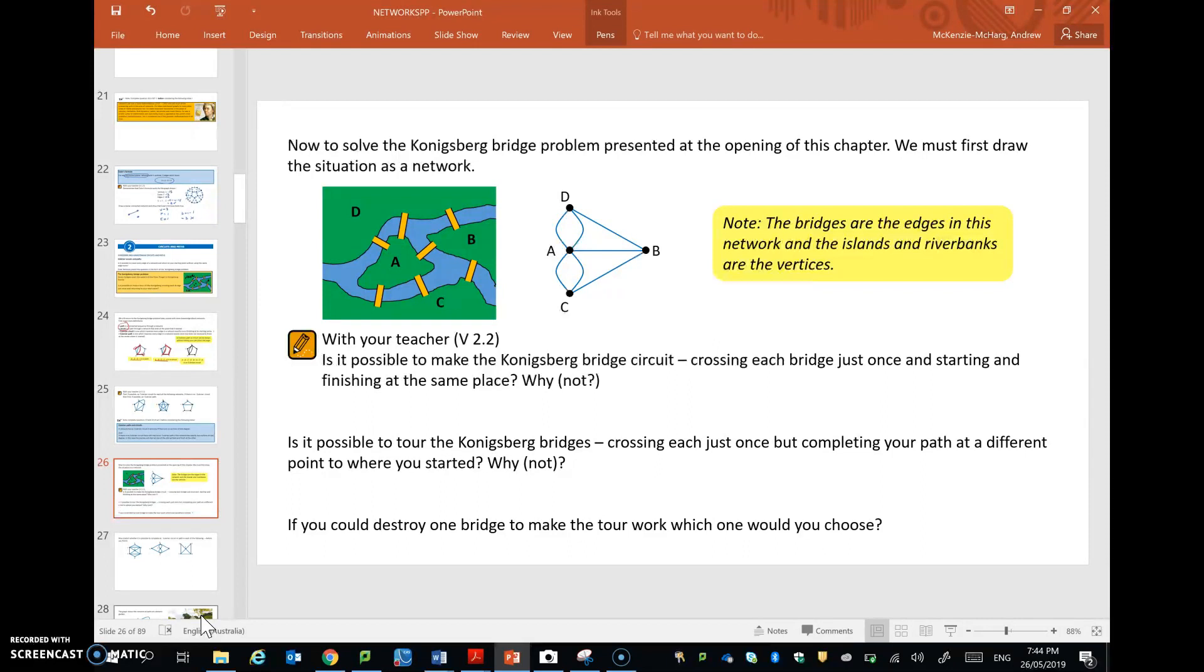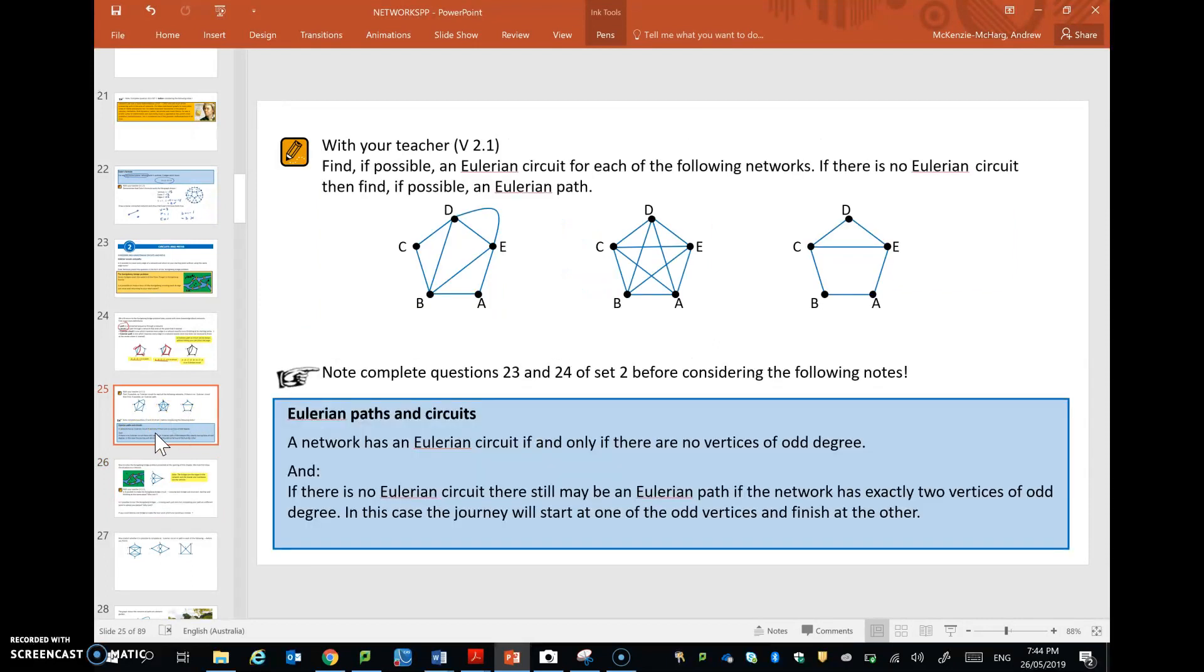Now, it's probably dawned on you that a network has an Eulerian circuit if and only if there are no vertices of odd degree.